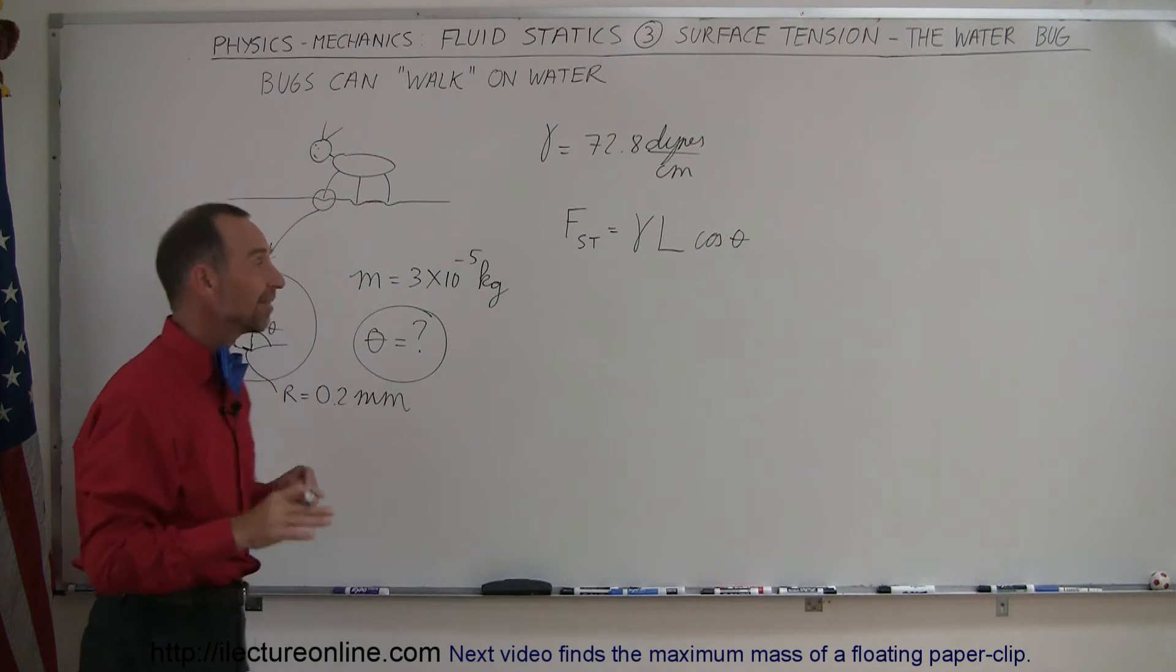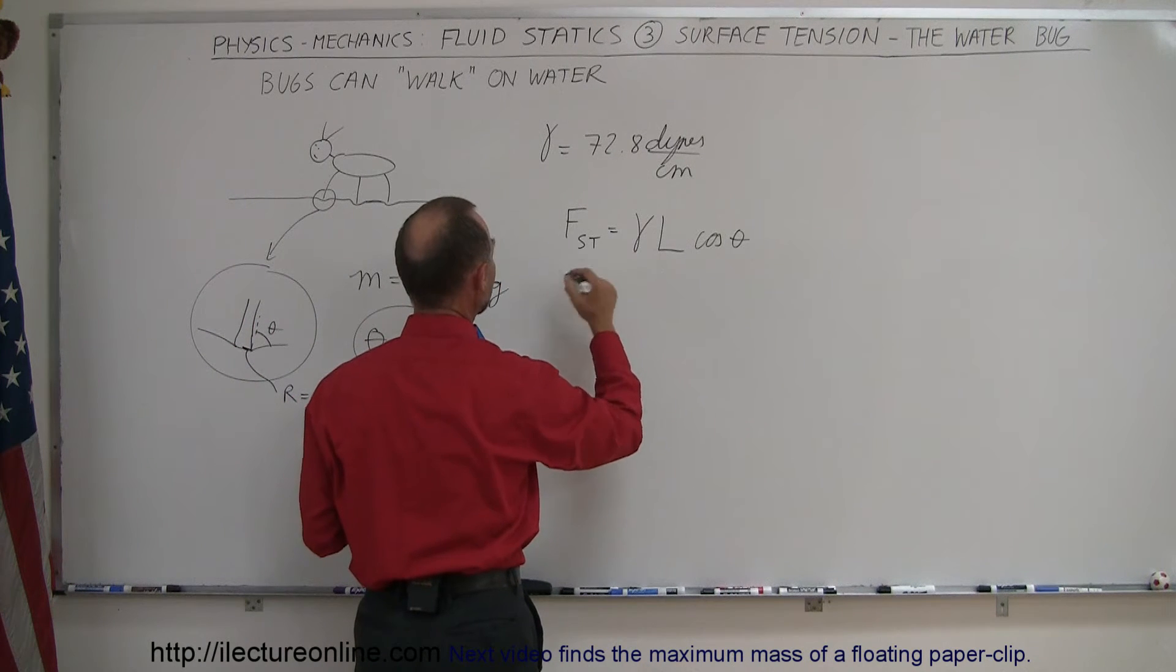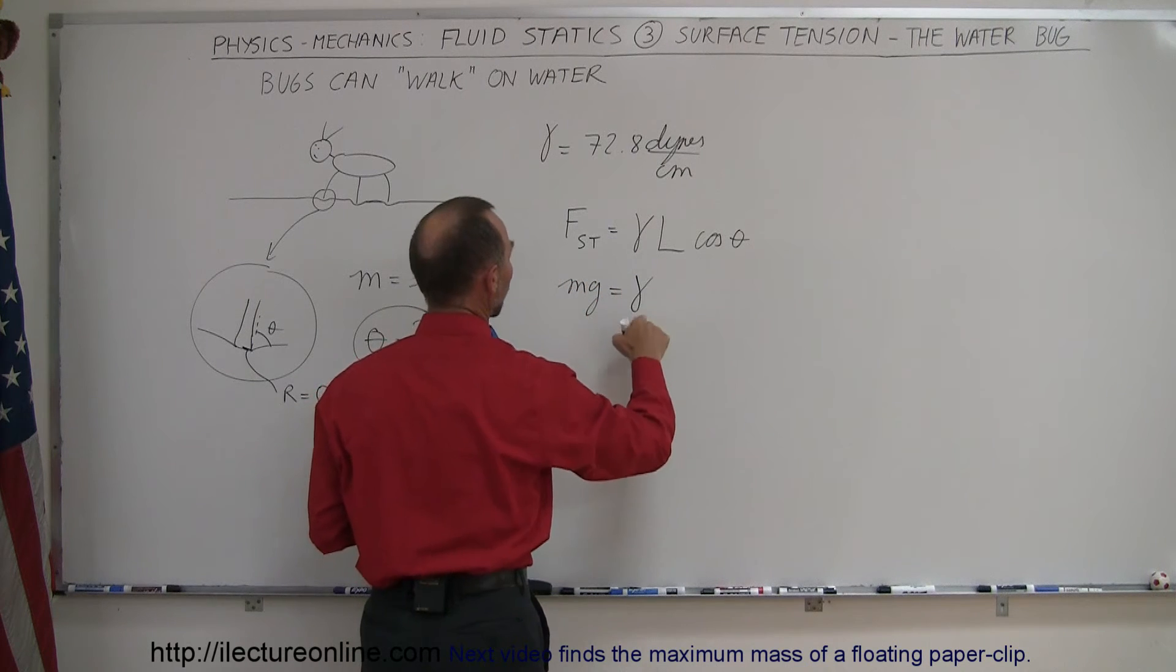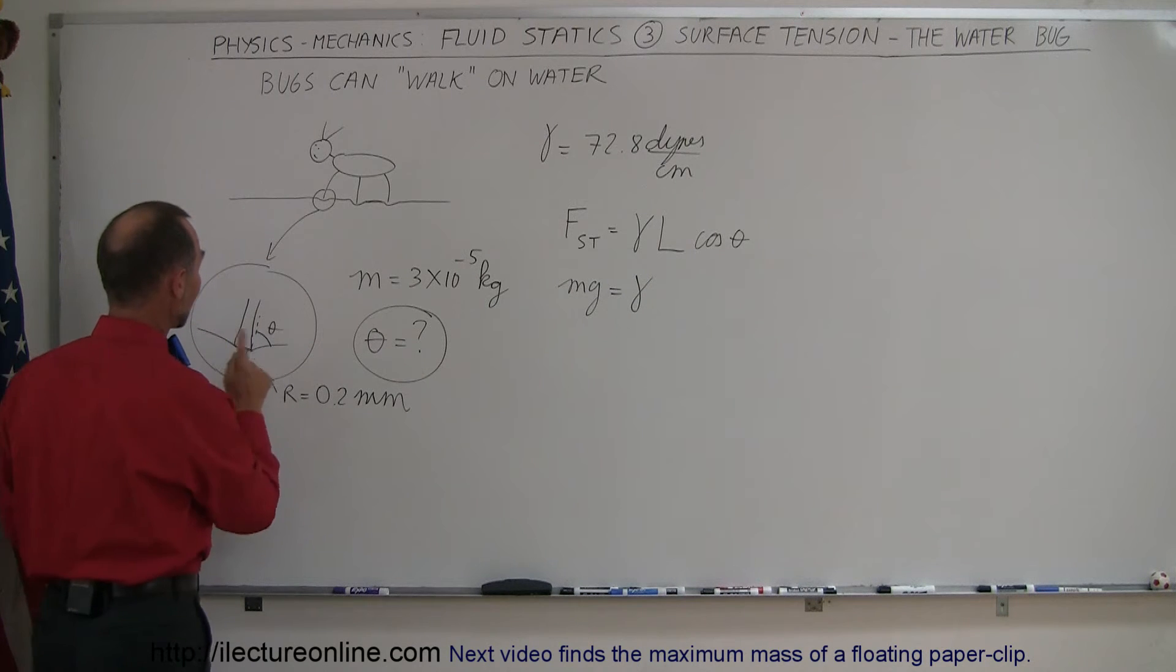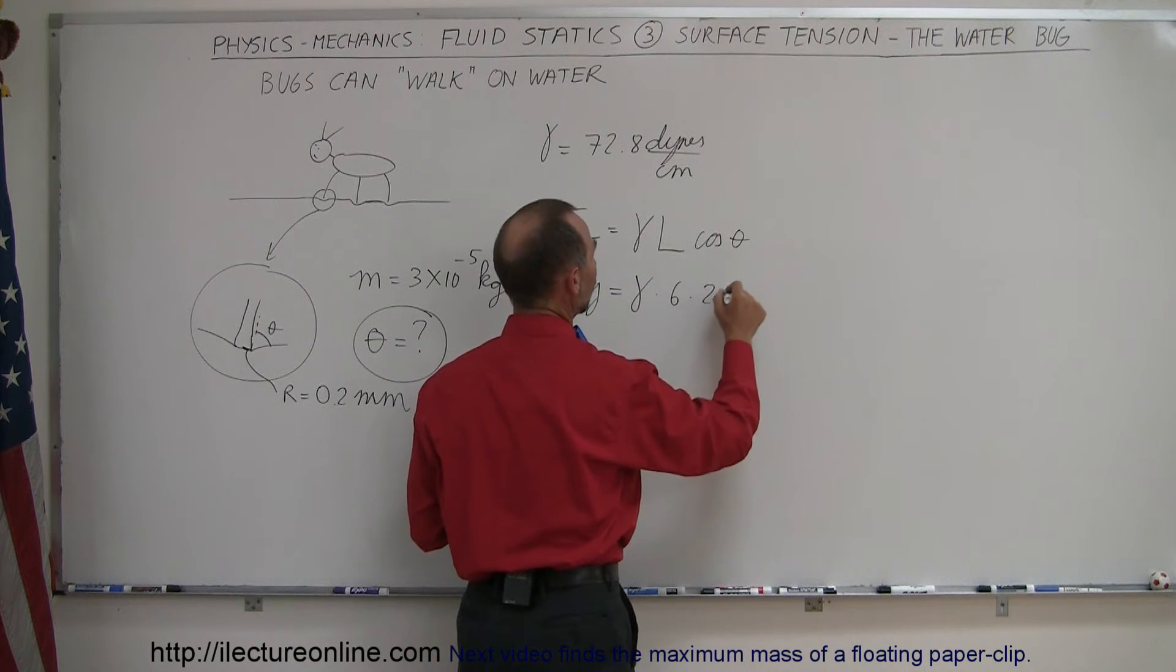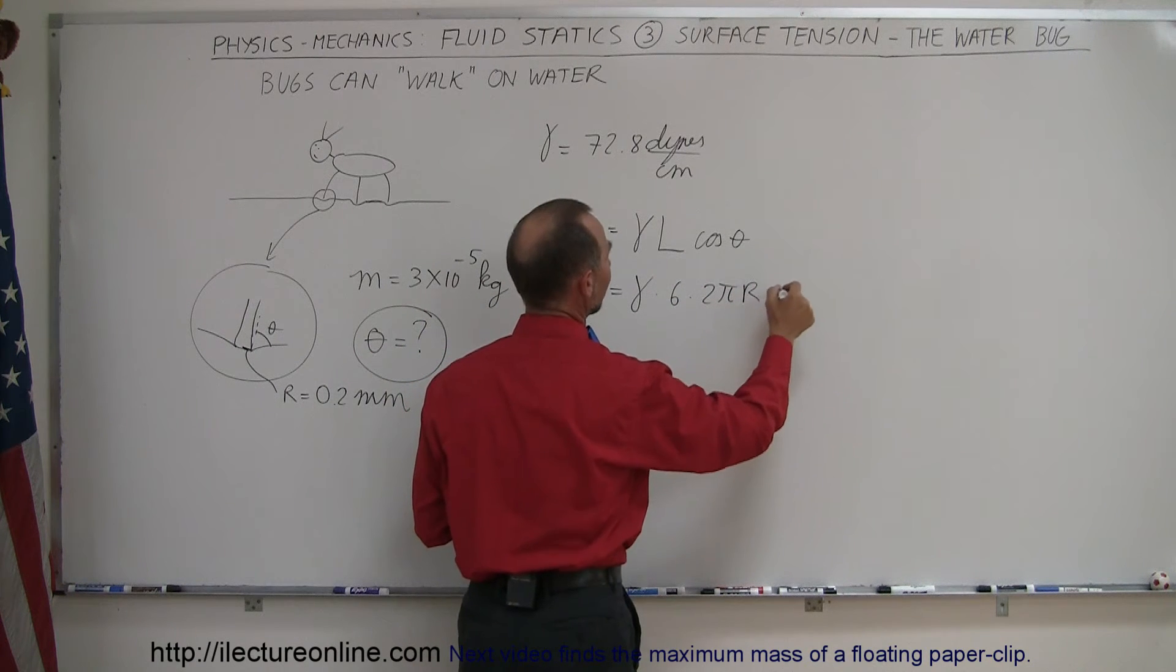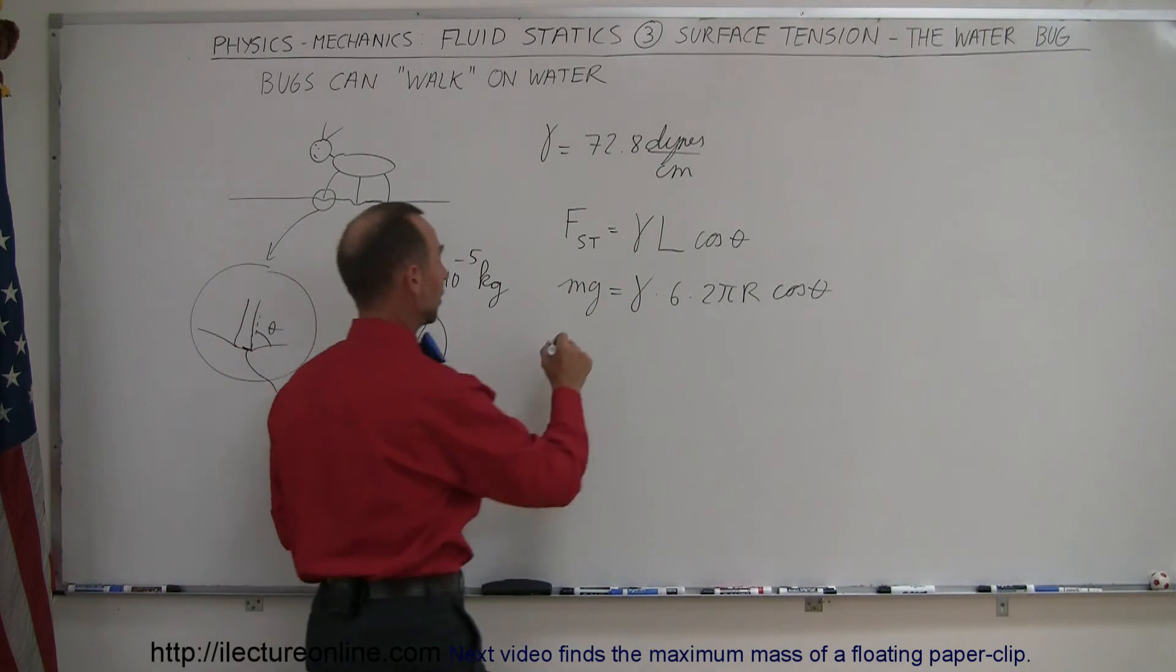Let's assume that the bug can stand on water and we're going to solve this for theta. So the surface tension would be equal to the weight of the bug, mg. That's equal to the coefficient times the length. There's six feet and each foot has a circumference, so it would be 6 times 2 pi r times the cosine of the angle theta. Which means we can now solve that for the cosine of theta.